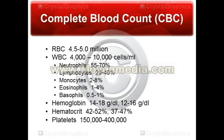Next is white blood cell count — normal is about 4,000 to 10,000. This is split up into different types of white blood cells. First, and arguably the most important, are neutrophils, which make up generally 55 to 70 percent of the total white blood cell count. Neutrophils will be elevated during times of acute bacterial infections. They are involved in phagocytosis and exist for about 6 hours, so they're often elevated when a patient comes in with some sort of acute infection.